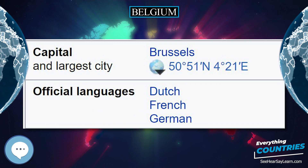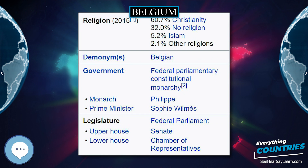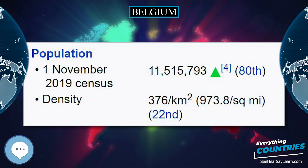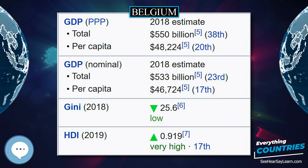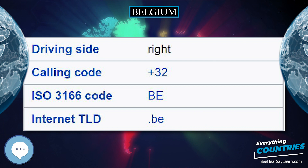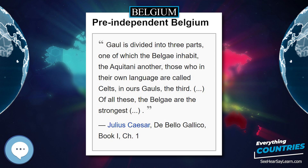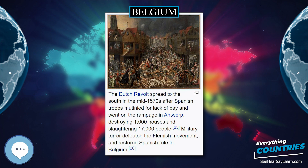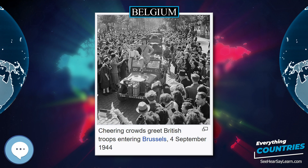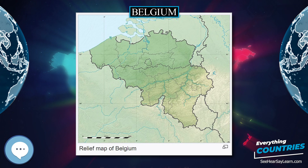After World War II, Ghent and Antwerp experienced a rapid expansion of the chemical and petroleum industries. The 1973 and 1979 oil crises sent the economy into a recession, particularly prolonged in Wallonia, where the steel industry experienced serious decline. In the 1980s and 1990s, the economic center of the country continued to shift northwards and is now concentrated in the populous Flemish diamond area. By the end of the 1980s, Belgian macroeconomic policies had resulted in a cumulative government debt of about 120% of GDP. As of 2006, the budget was balanced and public debt was equal to 90.30% of GDP.